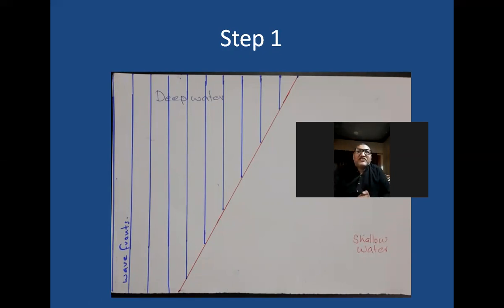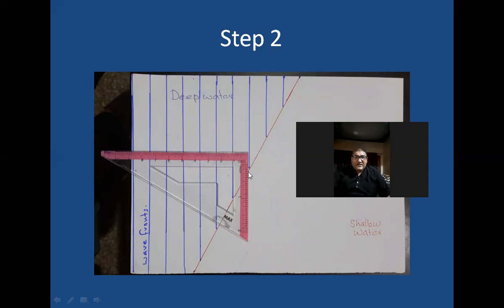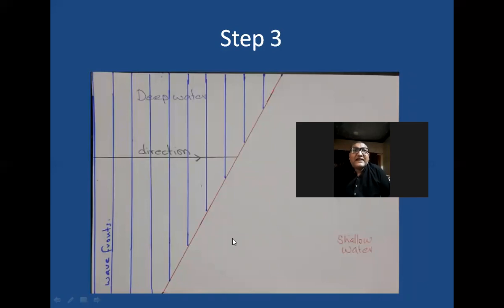The methodology is very simple. First of all, I have to draw the direction line. For the direction line, I will use a set square because the direction line should be perpendicular to the blue wavefronts which are in the deep water. I have put the set square so that this edge is perpendicular to the wavefronts, and I draw a line along this edge. That line is called the direction line, and it makes a 90 degree angle with the wavefronts.